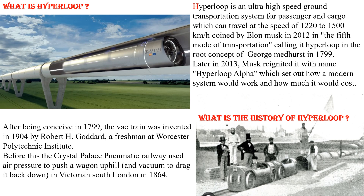The Crystal Palace Pneumatic Railway used air pressure to push a wagon uphill and vacuum to drag it back down in Victoria, South London, in 1864. This was the first practical concept — air pressure would push the wagon uphill, and vacuum pressure would pull it back down.